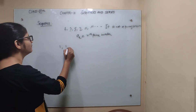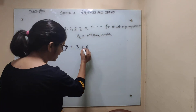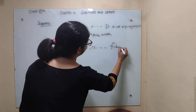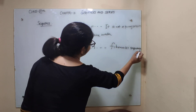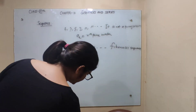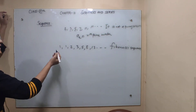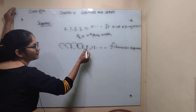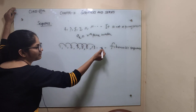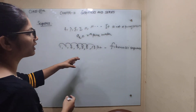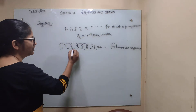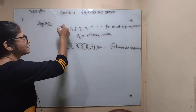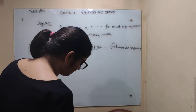Now consider the Fibonacci sequence: 1, 1, 2, 3, 5, 8, 13, and so on. This is also a progression because you can find each term using an explicit formula: 1 plus 1 equals 2, 1 plus 2 equals 3, 2 plus 3 equals 5, 3 plus 5 equals 8, 5 plus 8 equals 13, and so on. Each term is the sum of the two preceding terms. So this is a Fibonacci sequence and it is a progression, unlike the prime number sequence.